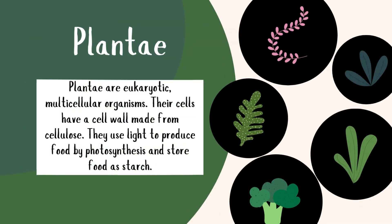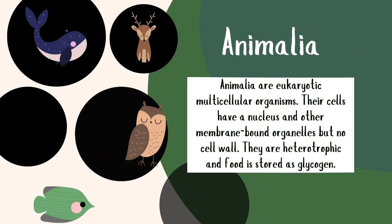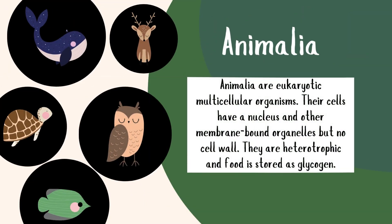Plants are multicellular organisms that use sunlight to make food through photosynthesis. Their cell walls are made of cellulose, and they store energy as starch. They're essential for life on Earth, producing oxygen and food. Animals are multicellular, eukaryotic organisms. They don't have cell walls and rely on consuming other organisms for energy. From insects to humans, animals are incredibly diverse and complex.